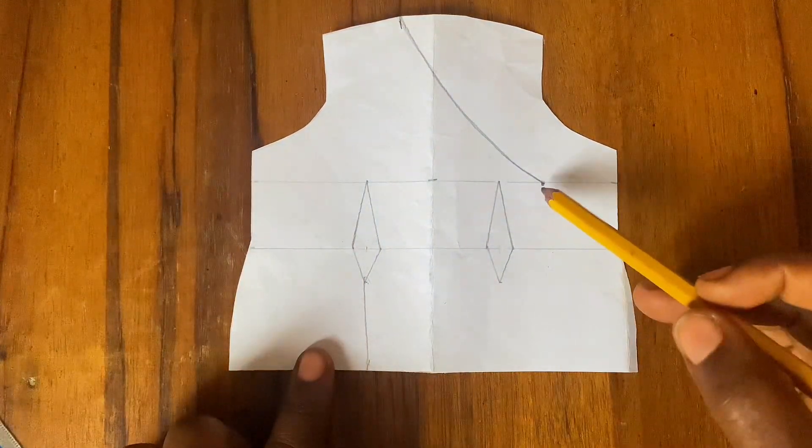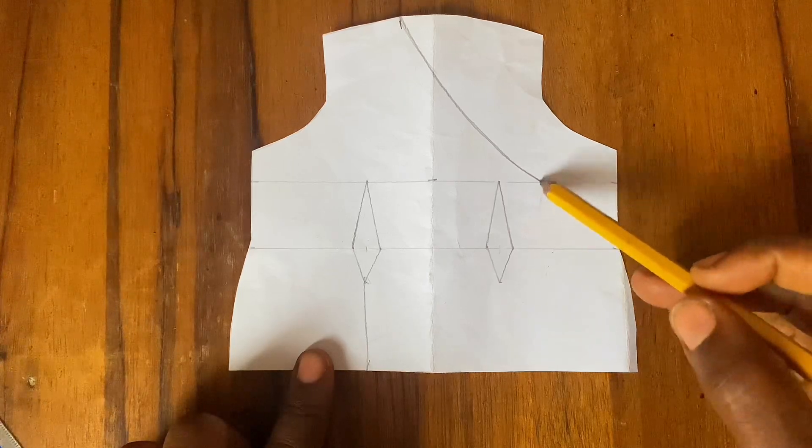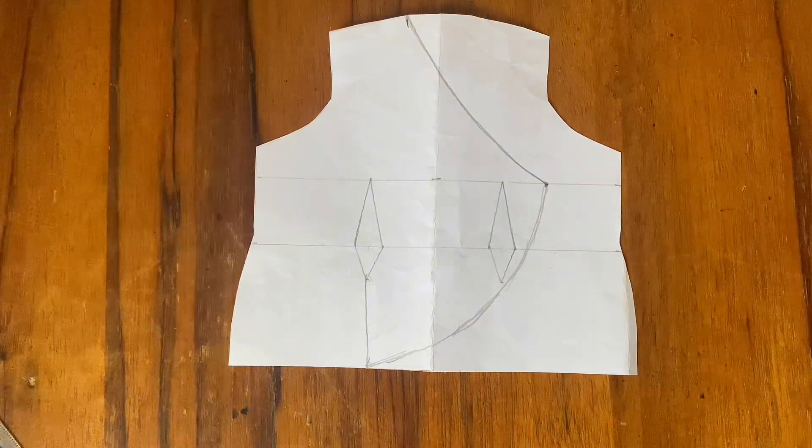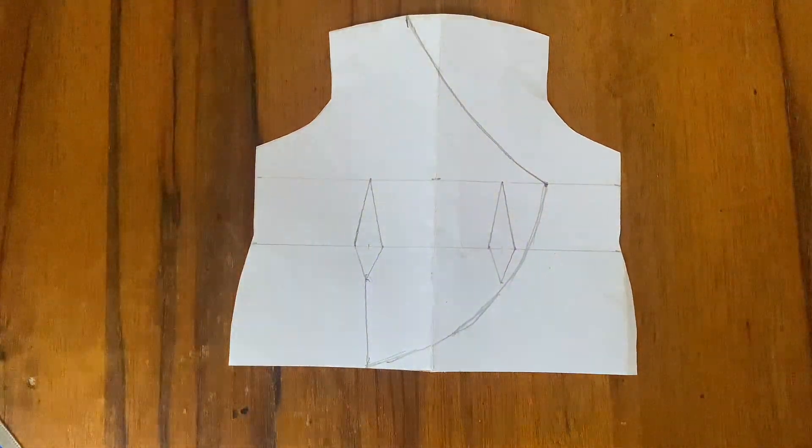Now from this part, you go on and connect to this part with a curve as well. You then go ahead and trim off the unwanted parts.